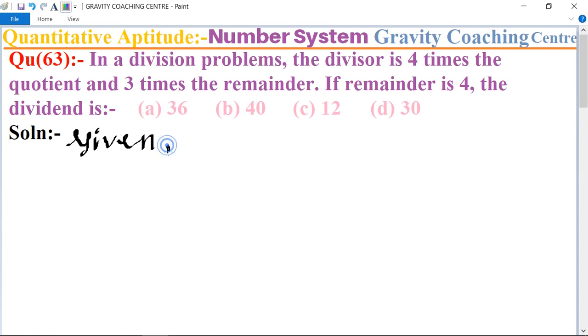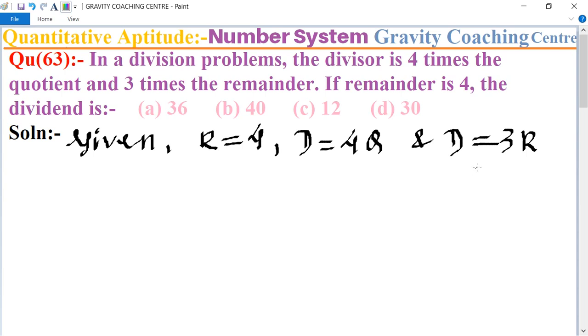In this question, given that the remainder R is 4, and the divisor is four times the quotient, means divisor D equals 4 times the quotient Q. And D equals three times the remainder, so D equals 3R.